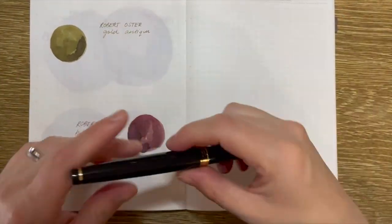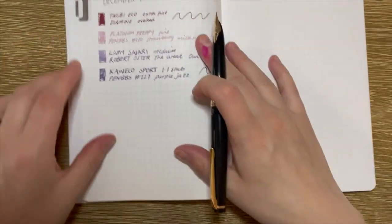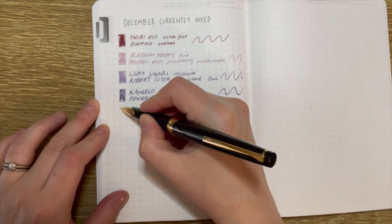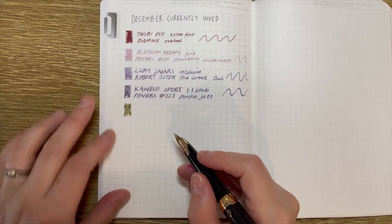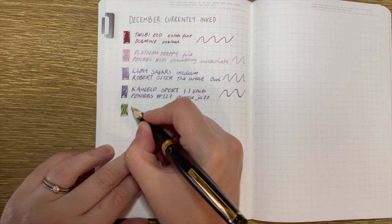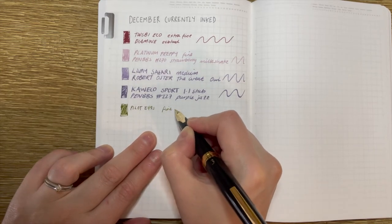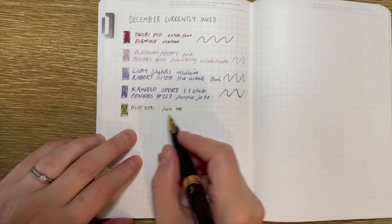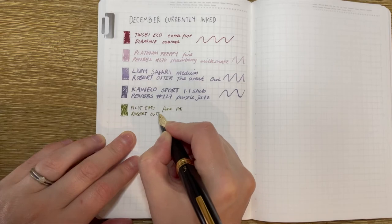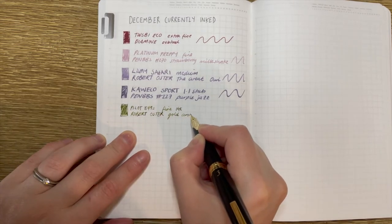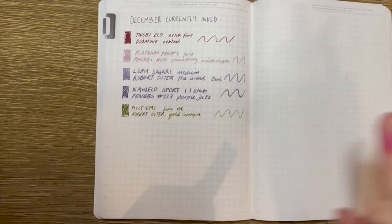So I thought we could do two writing samples of this. As I said, it's inked up with this. The first writing sample I'm going to do is I actually need to add it to my December currently inked. So it puts down a really nice amount of ink. You can kind of see there it's still drying. This is the Pilot E95s, 14k fine nib, Robert Oster. It just writes so smoothly. It's beautiful. It glides across the page. You know, it's a fine nib.